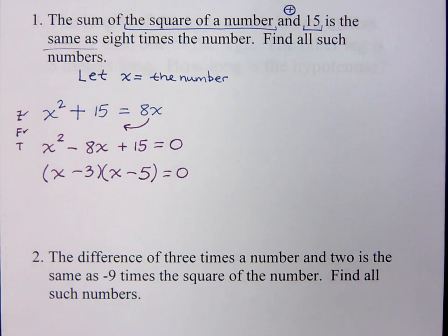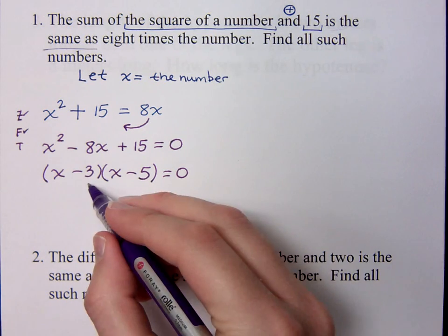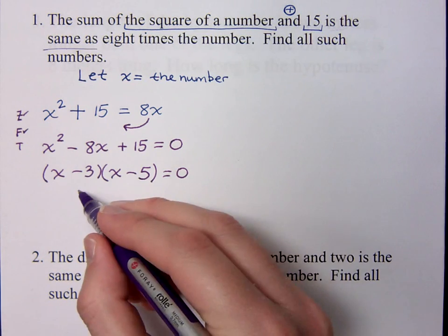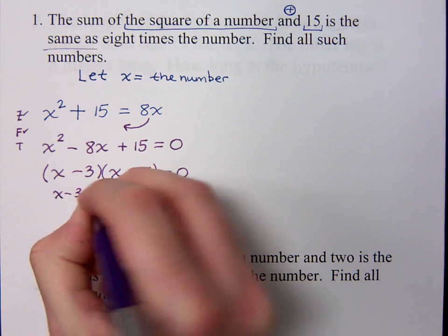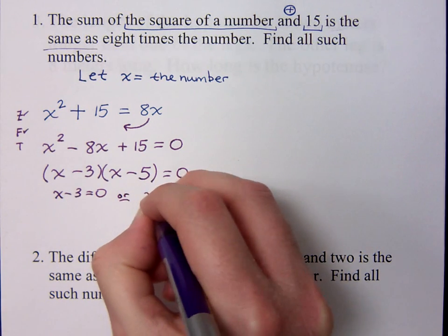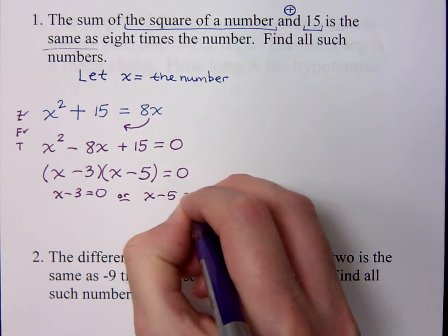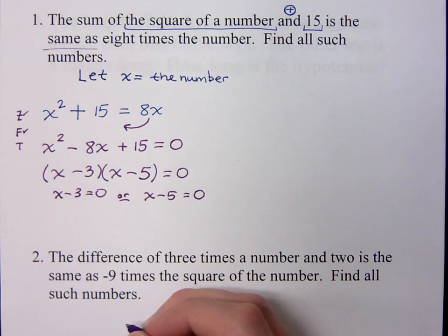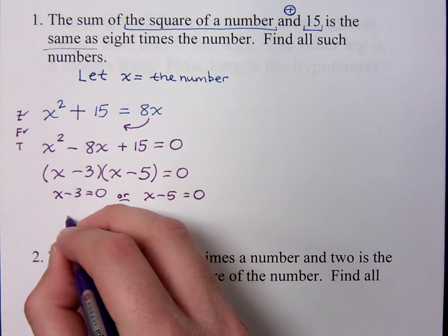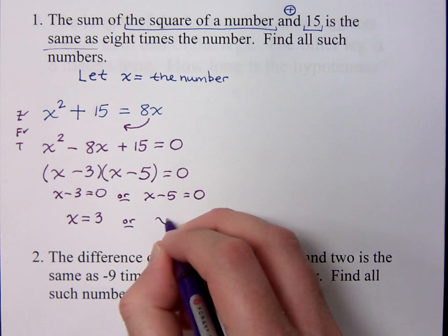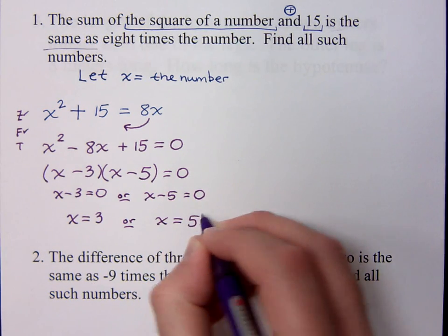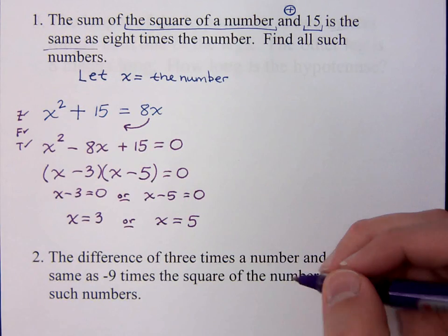Then I use the theorem. The theorem says when you're multiplying and you equal zero, somebody has to be zero. So that means that x minus 3 is equal to zero. Or it means the other factor, x minus 5, is equal to zero. Now, if x minus 3 equals zero, that means that x equals what? x equals 3 or x is equal to 5. So I have solved that equation.